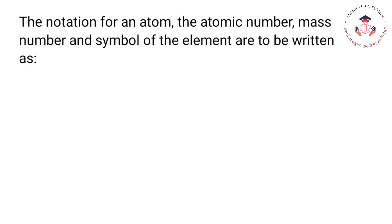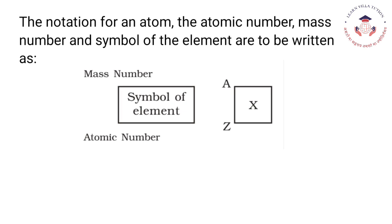The notation for an atom - the atomic number, mass number and symbol of the element - are to be written as: mass number on top and atomic number on bottom of the element.